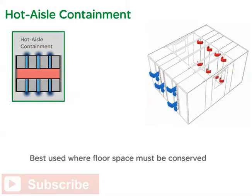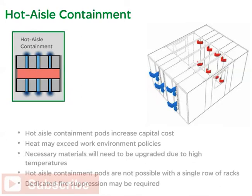Hot aisle containment pods are also found in data centers with hot aisle-cold aisle layouts. A trade-off to hot aisle containment pods is that they increase capital cost. They also may exceed work environment policies due to high temperature. Cabling, power strips, labels, and other necessary materials may not be able to withstand the high temperatures associated with a hot aisle containment and will therefore need to be upgraded. A hot aisle containment is not possible with a single row of racks, and dedicated fire suppression may be required by the authority having jurisdiction.